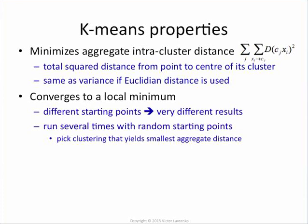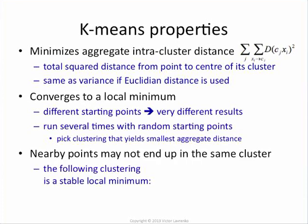Does that guarantee a global minimum? No, of course it doesn't — but you're getting closer and closer. If you do it infinitely many times, you will find the global minimum. So that is a problem. But there's actually a much bigger problem with k-means. When you think of a polythetic clustering method, things in the cluster should be close to each other, so you expect a method like that to put nearby points into the same clusters. Interestingly, that is not guaranteed in k-means.